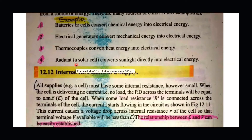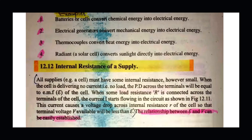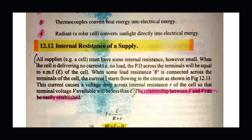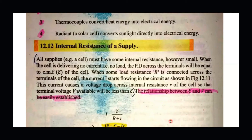Now we will discuss what internal resistance is. When the charge enters the battery at the negative terminal, the source of the battery also has a small resistance. This small resistance inside the battery is considered as internal resistance.